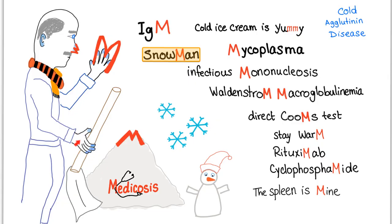We have talked about cold agglutinin disease before. Everything here is IgM. IgM is a pentamer and it literally looks like a snowflake. It is associated with infectious mononucleosis and Waldenström macroglobulinemia. The Direct Coombs test can help you diagnose it. Treatment: please stay warm. You can give rituximab, or cyclophosphamide if it's severe.